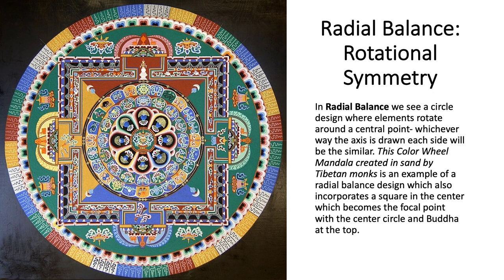In radial balance, we see a circular design where elements rotate around a central point. Whichever way the axis is drawn, each side will be similar. This color wheel mandala, created in sand by Tibetan monks, is an example of a radial balance design, which also incorporates a square in the center as the central focal point, with Buddha up at the top.